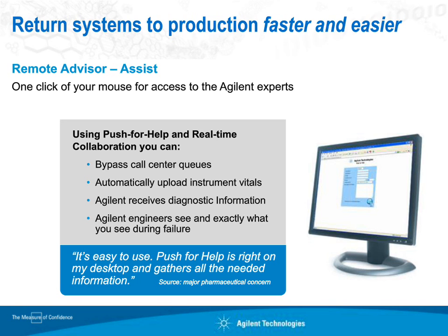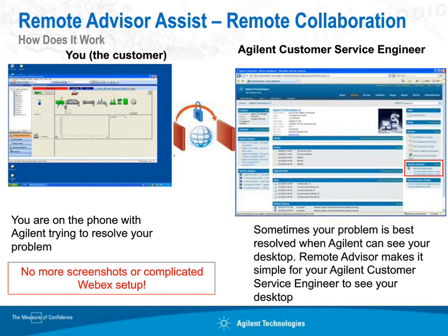This allows improved troubleshooting and saves you time. Today, if you don't have Remote Advisor, you call into our 1-800 number, troubleshoot over the phone with an Agilent engineer, and they may have to set up a WebEx or you may have to take screenshots and email them — it's more cumbersome. Whereas in Remote Advisor, when you click the button, the program automatically gathers up all the information, puts it in a package, and sends it to the Agilent engineer that's helping you. So it's a much cleaner, easier, and faster way of troubleshooting.